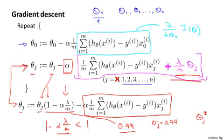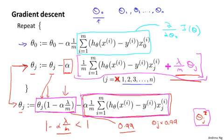So hopefully this gradient descent update makes sense. When we're using regularized linear regression, what we're doing is on every iteration, we're multiplying theta j by a number that's a little bit less than 1. So we're shrinking the parameter a little bit. And then we're performing similar updates as before. Of course, that's just the intuition behind what this particular update is doing. Mathematically, what it's doing is exactly gradient descent on the cost function j of theta that we defined on the previous slide that uses the regularization term.